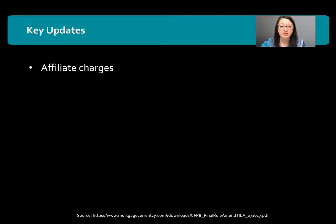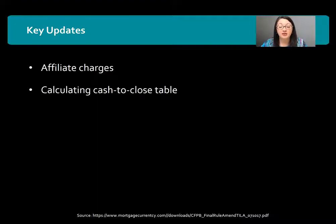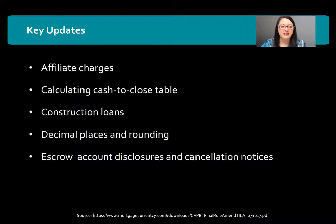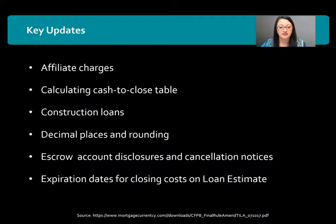They're making clarifications to affiliate charges. Affiliates of lenders could be title companies, credit reporting companies, things like that — clarifying how those charges need to be addressed. The calculating cash to close table, construction loans, clarifying when and what fees can change since construction loans can take up to 120 days or longer. Decimal places and rounding — they're getting even more specific about that. Escrow account disclosures and cancellation notices, expiration dates for closing costs on loan estimates — so when do the fees actually expire and give funds? Also, lender and seller credits, getting more clarification on who's responsible for what.